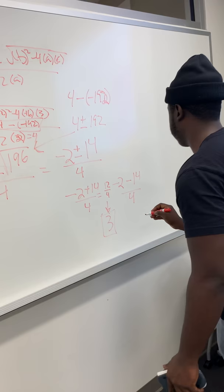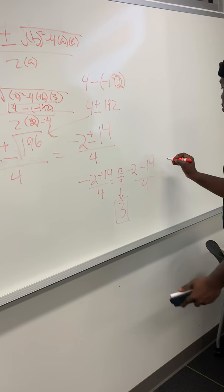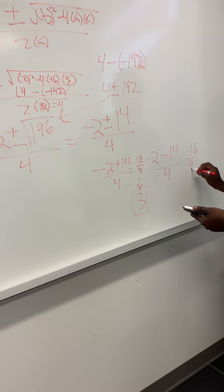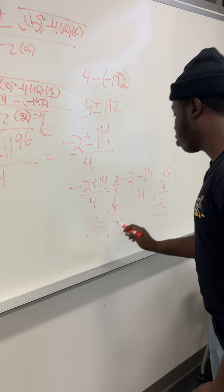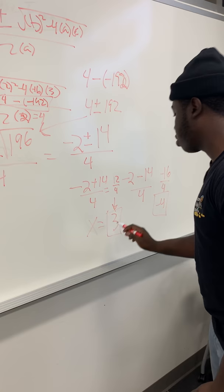The other answer is negative 4. Negative 2 minus 14 equals negative 16 over 4, which is negative 4. So x equals 3 and x equals negative 4. Thank you.